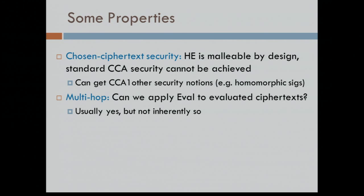Multi-hop is another property. Once you encrypt your data, you can compute on it using the eval procedure. The question is whether, once you've computed and obtained c*, you can keep computing on it after the fact. For most schemes we have, the answer is yes, you can — though not always. There are things you can do if your cryptosystem doesn't support it; you can fix it so that it does support multi-hop, at least to some extent.